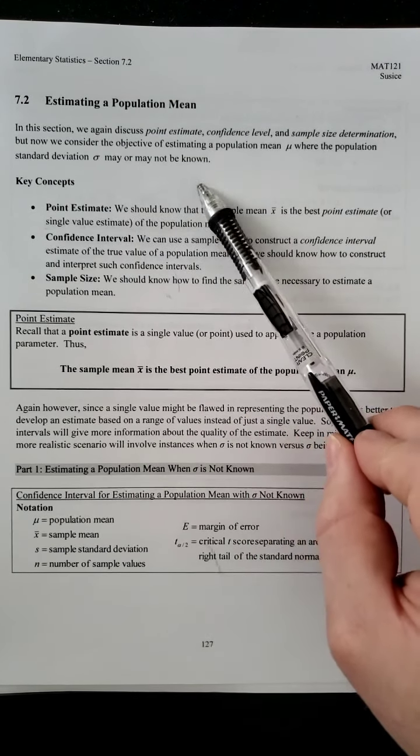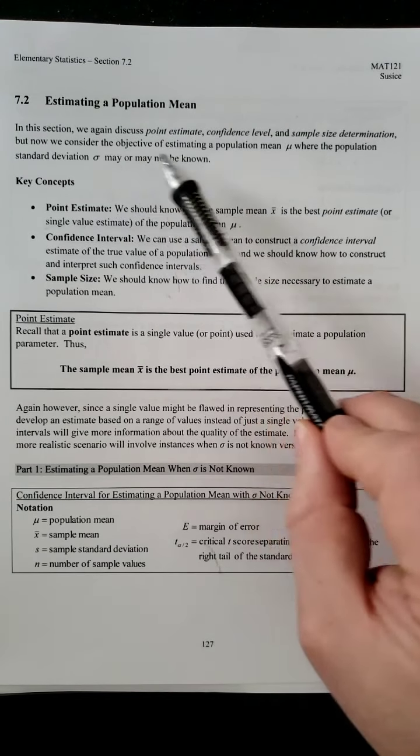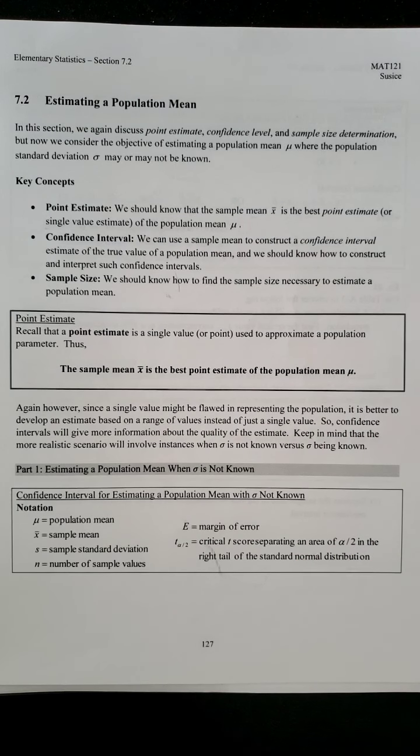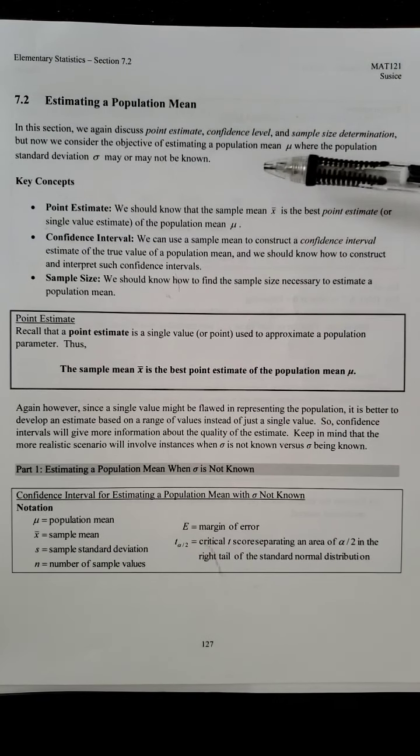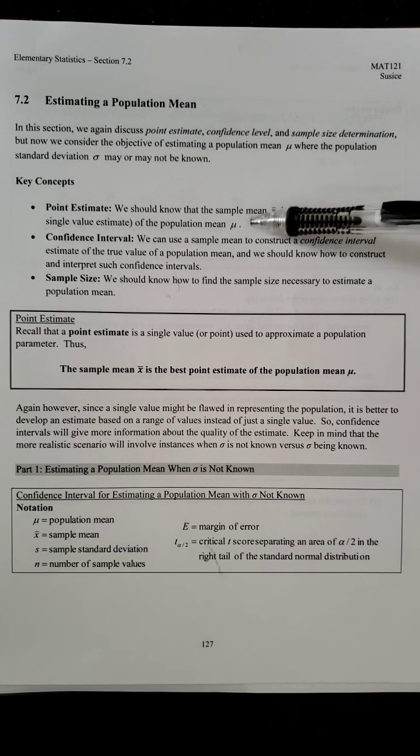So you're going to be able to determine that from the given information though. So you'll be able to make that distinction right off the bat. Okay, so what are our key concepts? We got our point estimate. We should know that the sample mean, x bar, is the best point estimate, or the single value estimate of the population mean, mu.